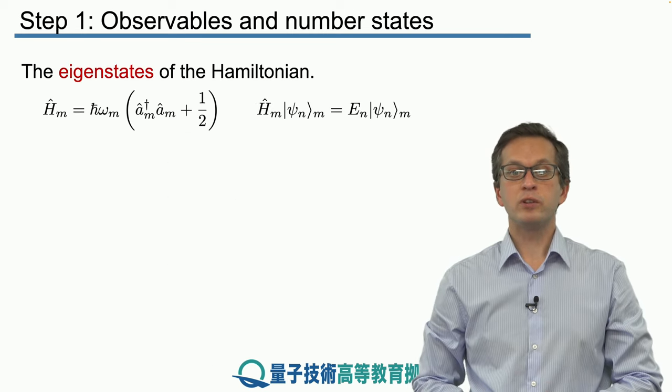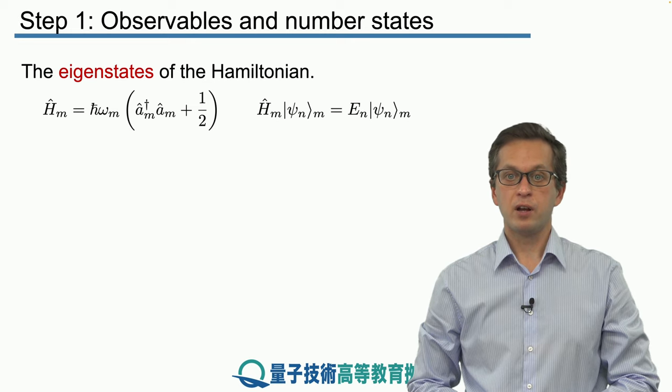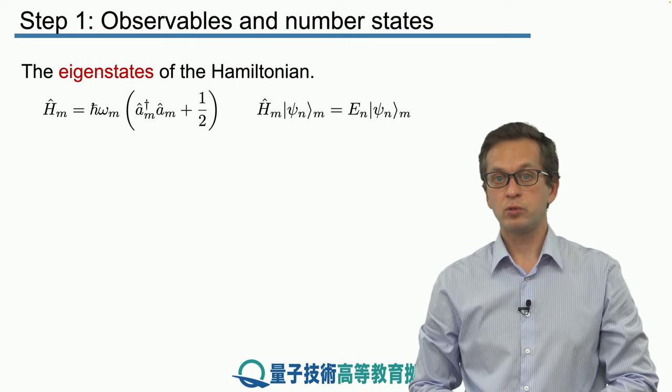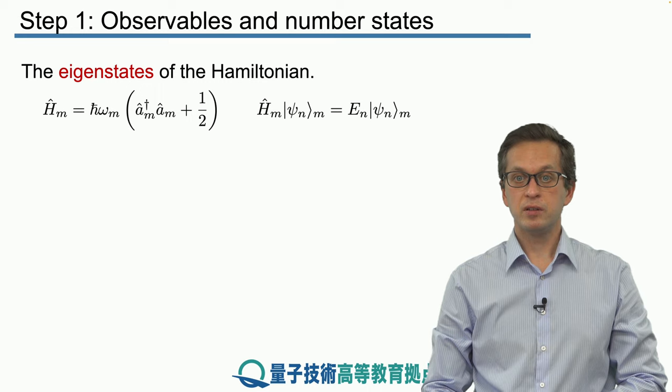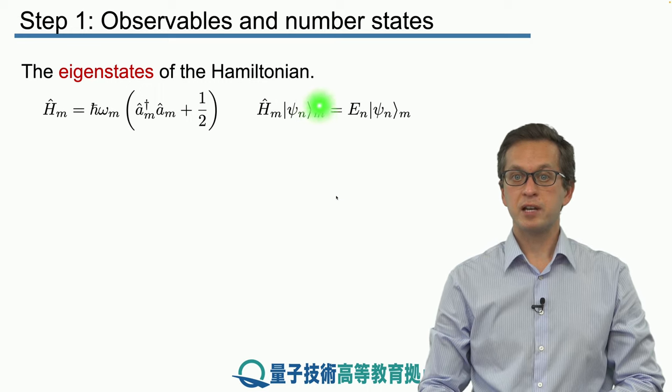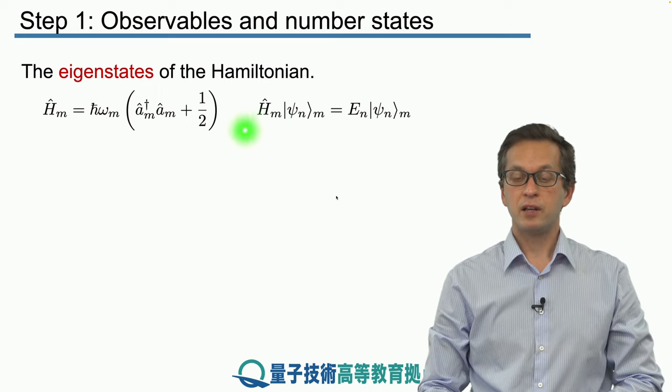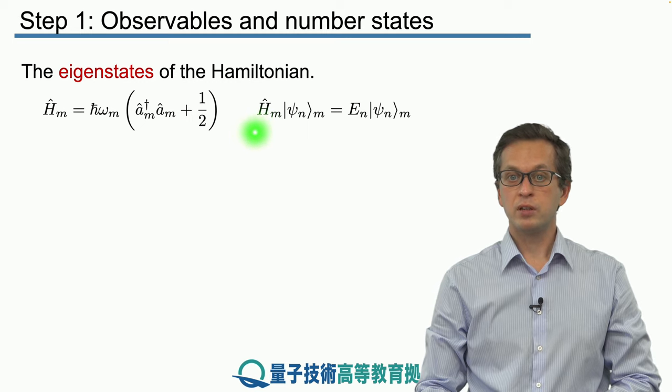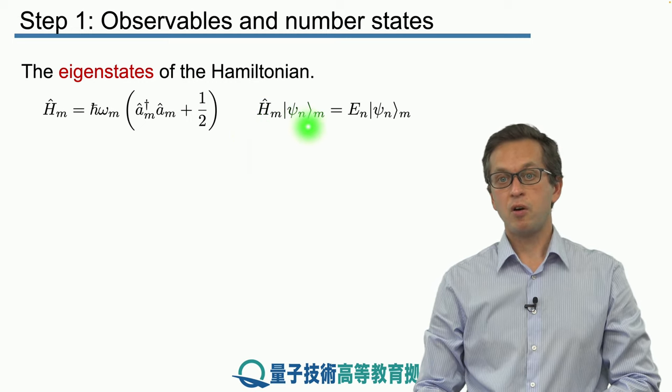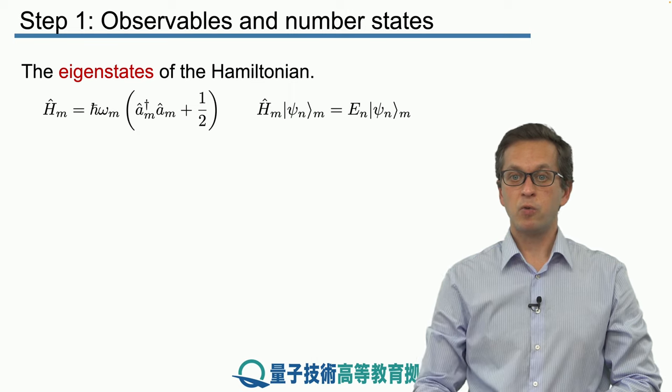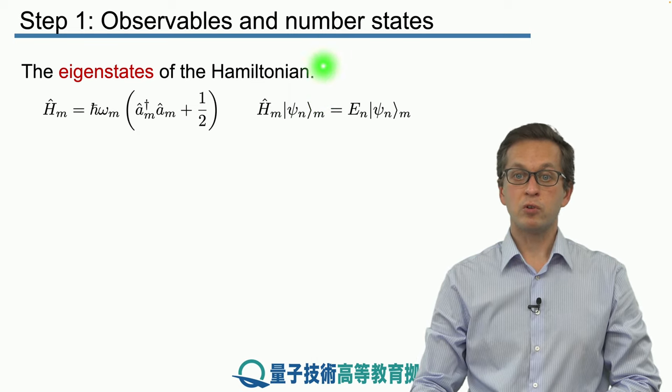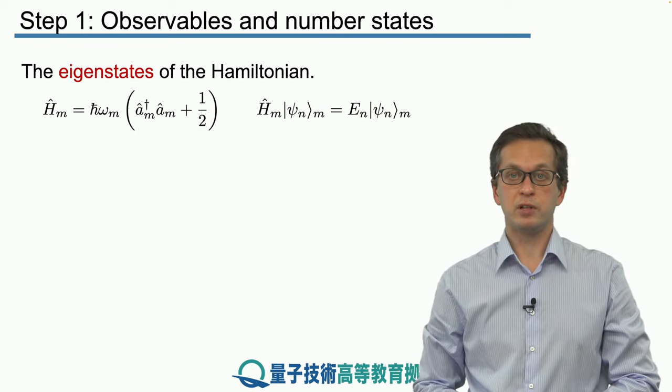We have seen the eigenstates of our Hamiltonian for a single mode. They are given by eigenvectors ψₙ, such that when we compute the effect of the Hamiltonian on our eigenvector, we get the eigenvalue or eigenenergy corresponding to that eigenvector.